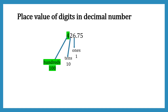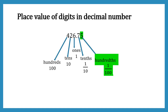Now let's look at the decimal part and its place values. The first digit on the right-hand side is 7 and it has a place value of 1/10. The second digit is 5 and it has a place value of 1/100.